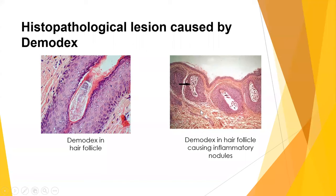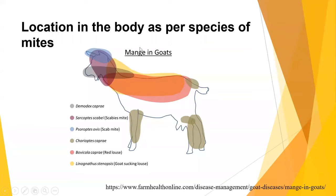The predilection sites for mites in the goat vary by species: Demodex capri is mainly found in the face; Sarcoptes capri in the muzzle and head area; and Chorioptes in the legs and tail.